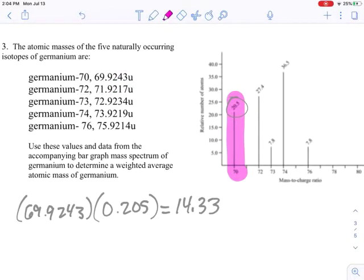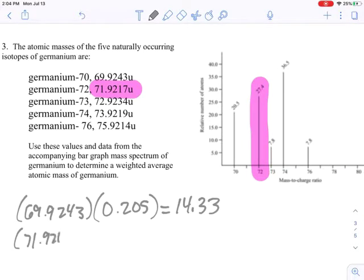All right. Next up is this guy here. So we've got a mass of 71.9217 and an abundance of 0.274, because that's what its percentage is, 27.4%. Assuming I've done my math right, this is 19.71.